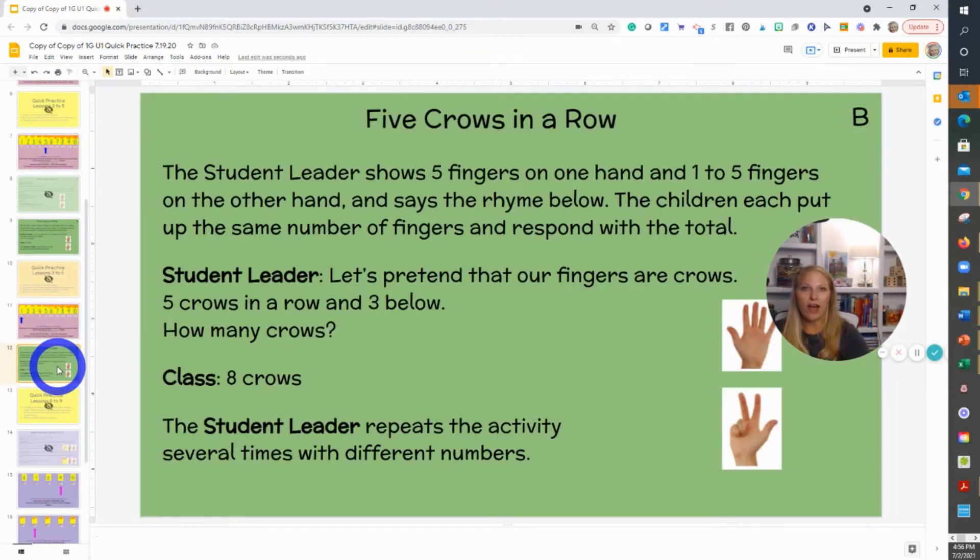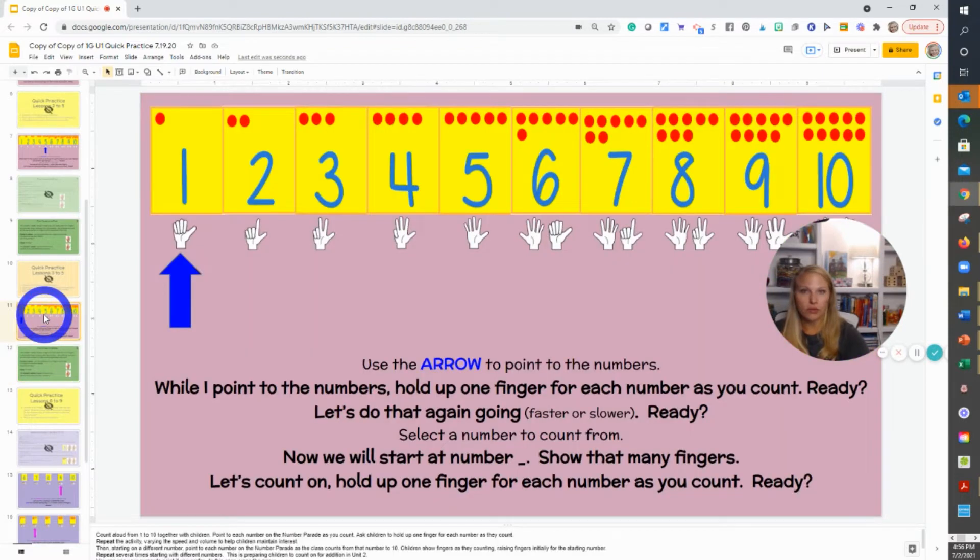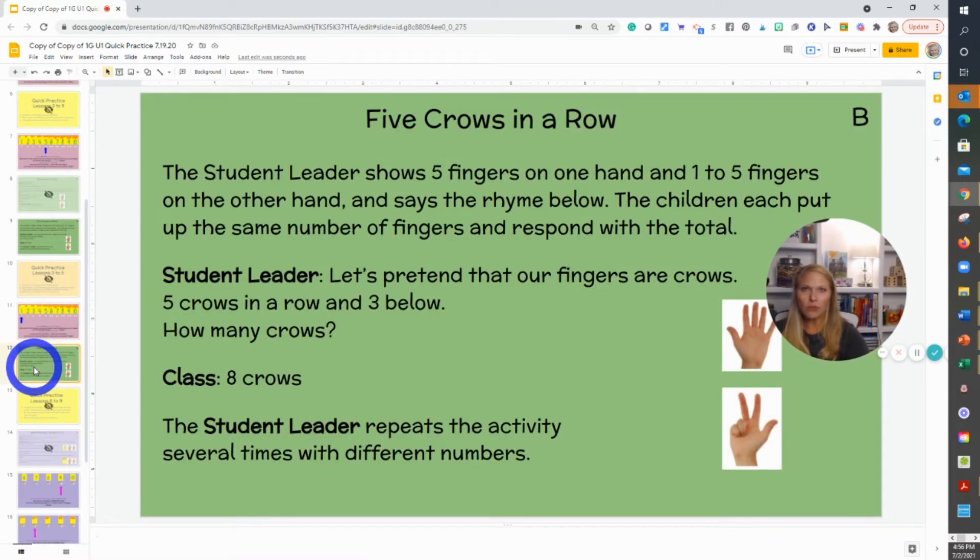Now we're going to introduce Five Crows in a Row. This is going to continue for several days, and we do also in combination with that Five Crows in a Row, which students love. So I have a student leader who comes up and they're going to put five crows right here. This is working on that subitizing, that five group, and knowing that numbers from six to ten hold a five within that number and then extras.